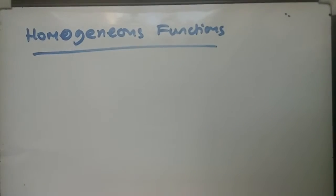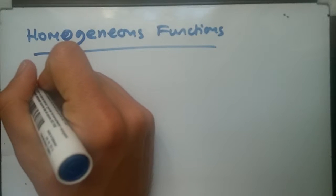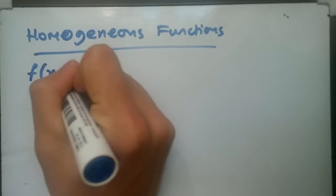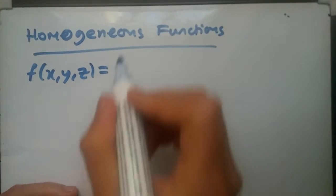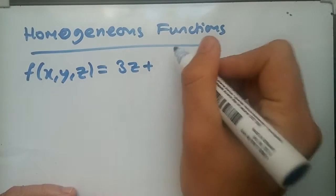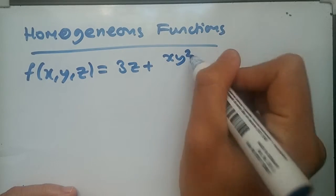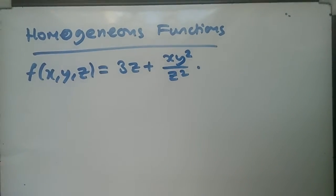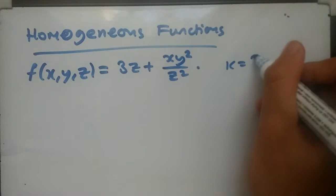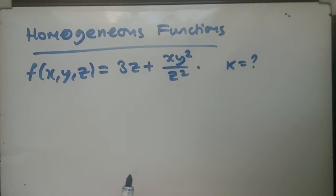Alright, so consider the function, this is example one. Consider the function in terms of x, y, z, three variables, is given by 3z plus x times y squared over z squared. Now we want to check if it's homogeneous or not and check what its degree of homogeneity is. In other words, what the value of k would be. This would identify its homogeneity.